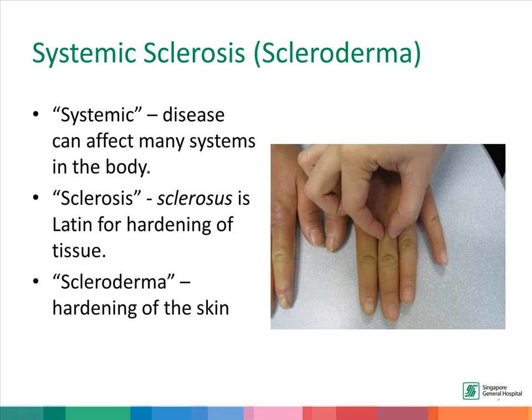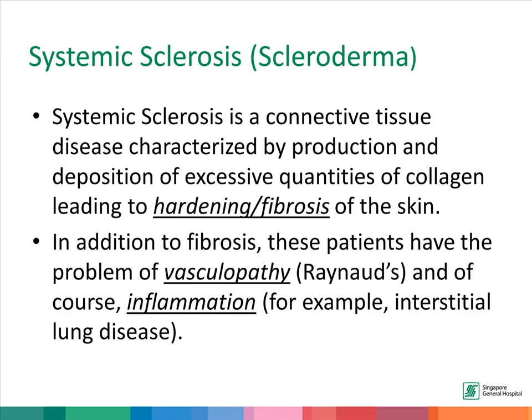The next important CTD is systemic sclerosis or scleroderma. As the name suggests, it's a condition which is systemic — that is, the disease can affect many systems in the body — and there is sclerosis, which is the Latin word for hardening of tissue. The condition is also known as scleroderma, which means the hardening of the skin. In systemic sclerosis, we see hardening and fibrosis of the skin, but these patients also have vasculopathy characterized by Raynaud's syndrome, and inflammation, for example interstitial lung disease.